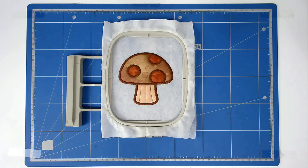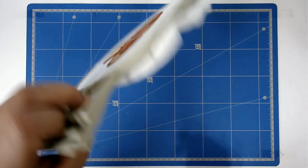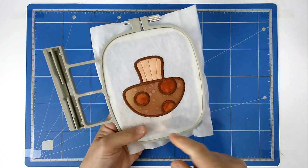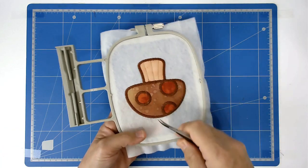You're now going to free your mushroom from the hoop. Turn your hoop over and you're going to cut around the edge, taking care not to cut the stitching.